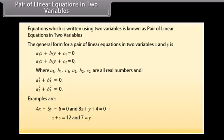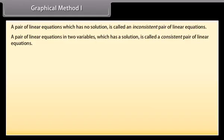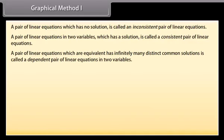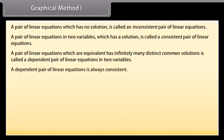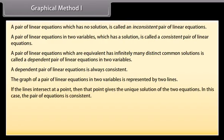A pair of linear equations which has no solution is called an inconsistent pair of linear equations. A pair which has a solution is called a consistent pair. A pair which has infinitely many distinct common solutions is called a dependent pair of linear equations in two variables. A dependent pair is always consistent. The graph of a pair of linear equations is represented by two lines. If the lines intersect at a point, that point gives the unique solution — the pair is consistent.